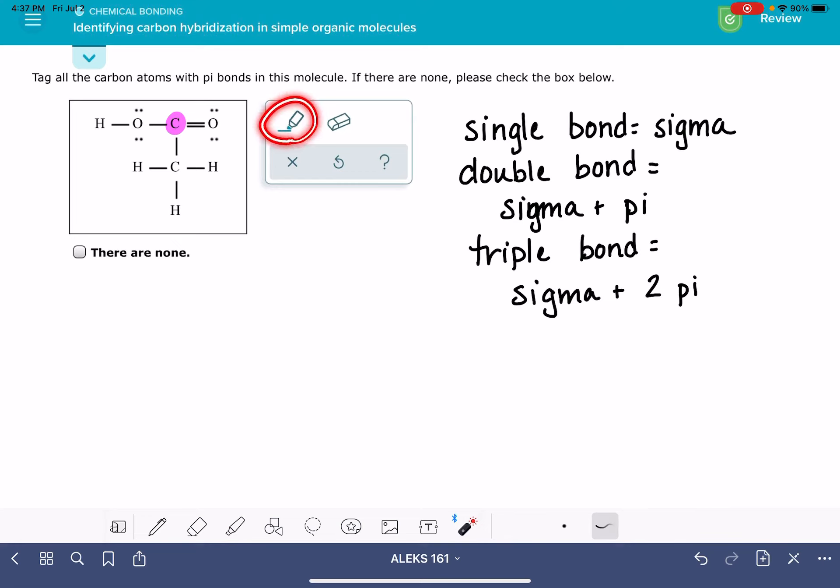We're going to use this highlighter-looking tool just to mark this carbon. This carbon atom has only single bonds around it, which means it has only sigma bonds around it, no pi bonds, so this would not be marked.